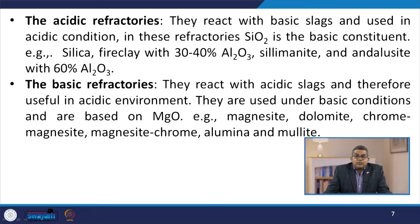The basic refractories react with acidic slag and are therefore useful in acidic environments. They are used under basic conditions and are based on MgO — that is magnesite, dolomite, chrome magnesite, magnesite chrome, alumina, and mullite. Neutral refractories do not react with either acidic or basic slags, hence useful in both acidic and basic media — that is carbon, chromite (FeO·Cr₂O₃), and forsterite (2MgO·SiO₂).